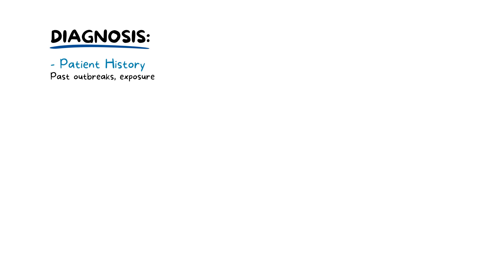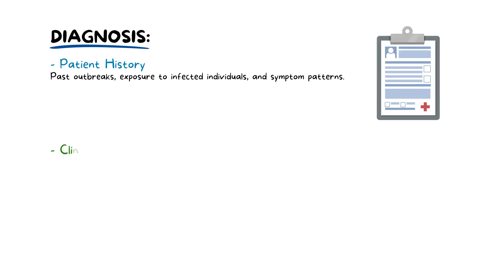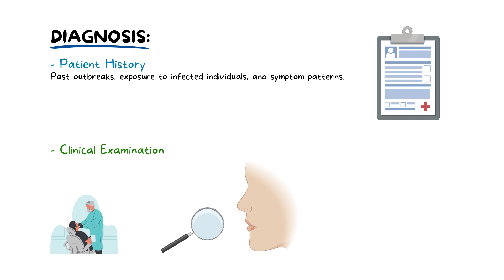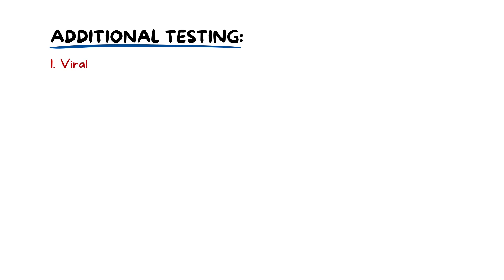The diagnosis of HSV involves both clinical assessment and patient history. However, in some cases, additional testing is necessary for confirmation. This starts with gathering information about past outbreaks, exposure to infected individuals, and symptom patterns. This is then followed by a clinical examination, which includes visually inspecting sores to identify characteristic signs of HSV — small, blister-like spots around the lips.